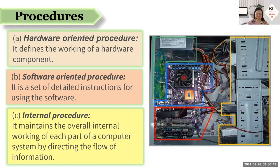The software-oriented procedure is a set of detailed instructions for using the software. There is software that is already designed or intended for a specific purpose, so if you don't know how to use it, you can never make the computer useful. We are studying ICT in order to learn the procedure of how to make use of this kind of software — that's what we mean by software-oriented procedure, because we must know how to make use of the software to really maximize the computer's full benefits.